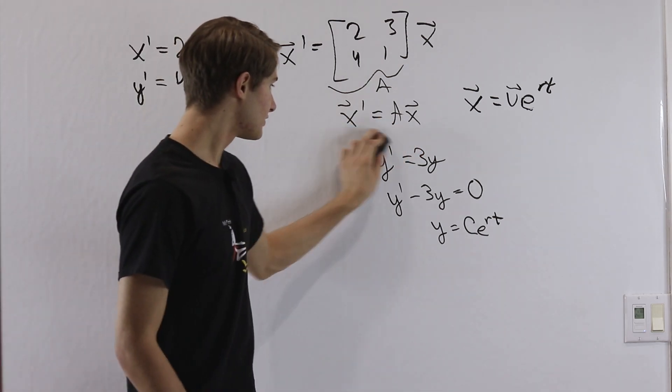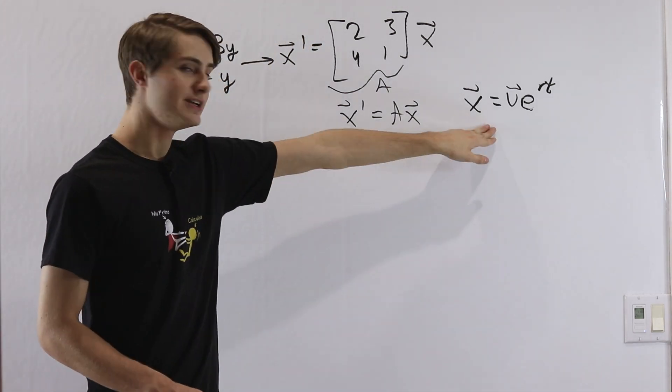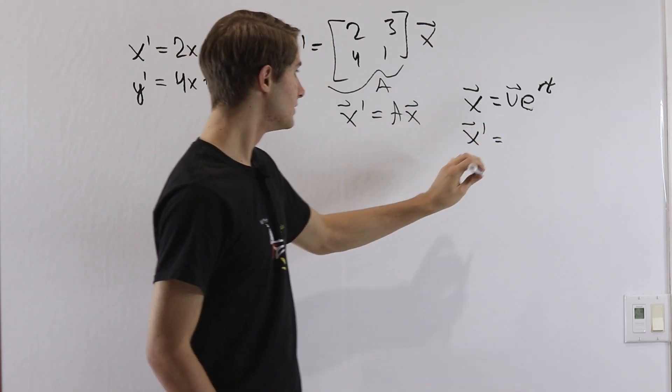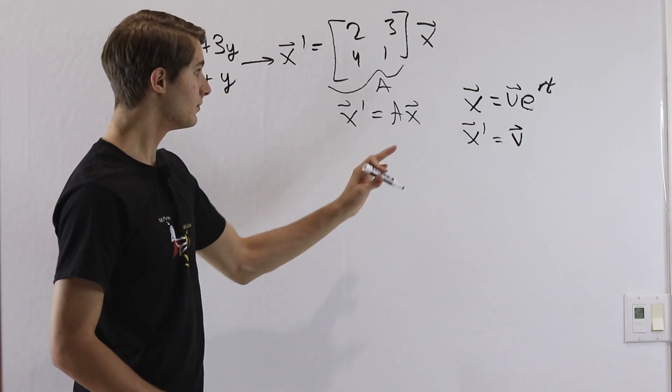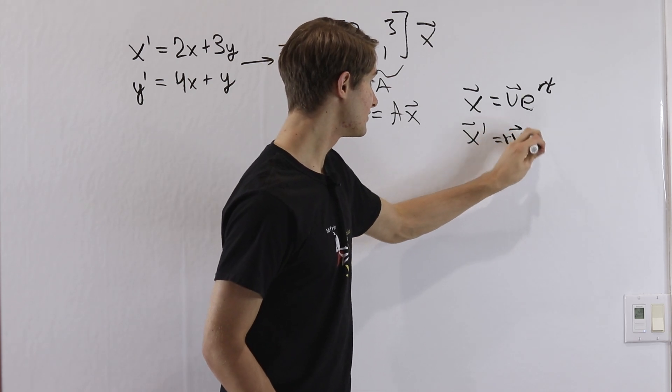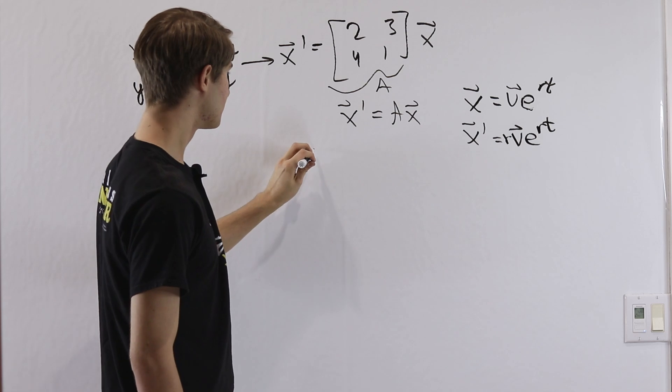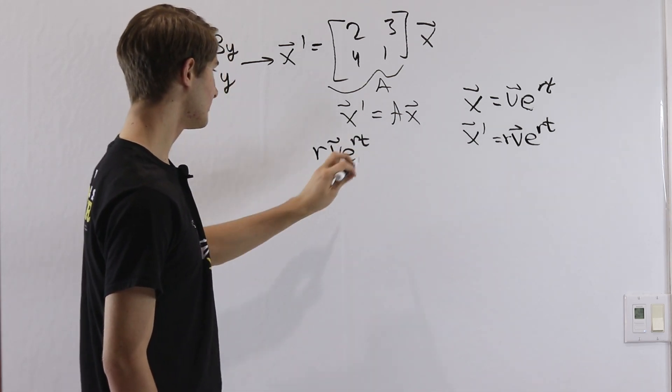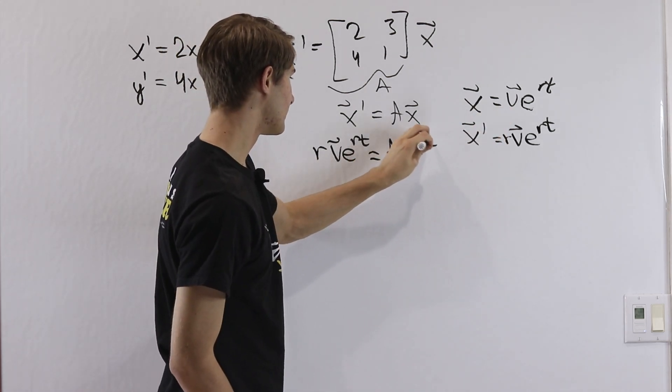So let's give ourselves some space and try to go through this problem here. When we differentiate x, we're going to get x prime equal to, remember v again is a vector of constants, so that's not going to change at all when we do this differentiation. But when we have e to the rt, differentiating that gives us r times e to the rt. So now when we go back to this equation, we're going to have r v e to the rt on this left side equal to a times x is v e to the rt.